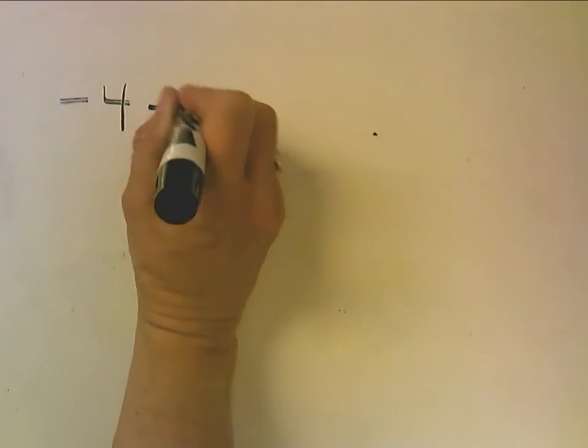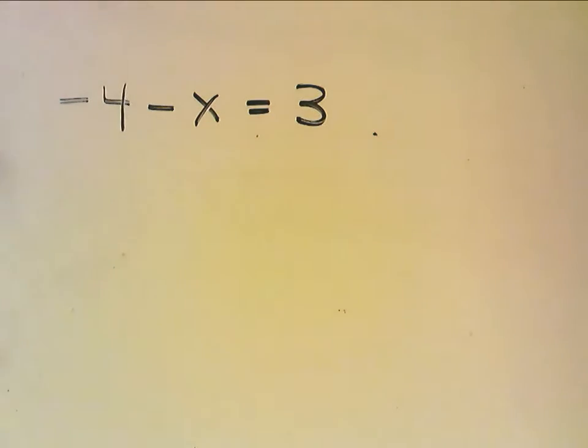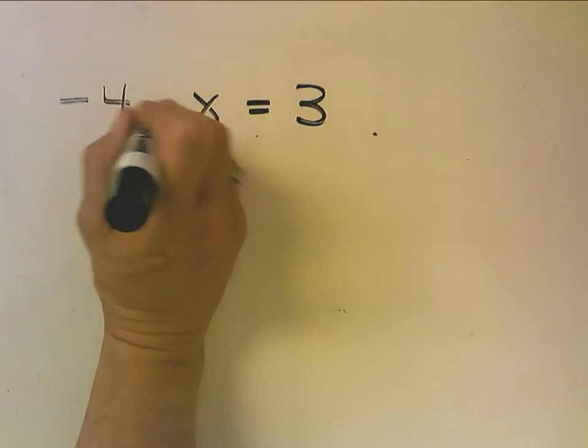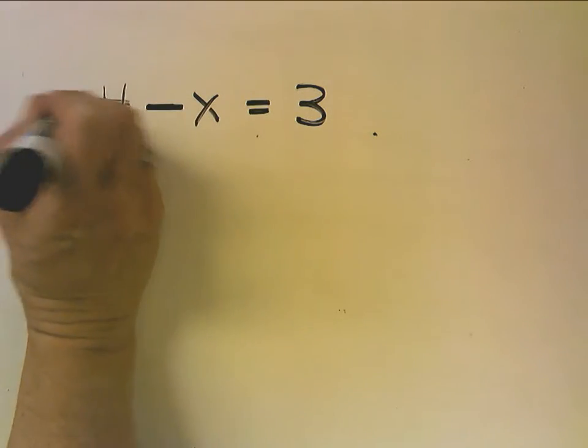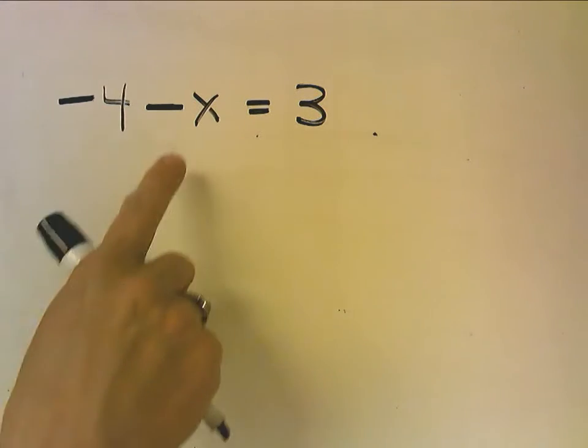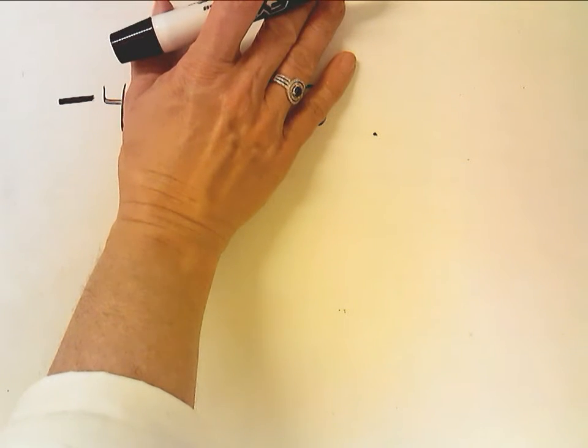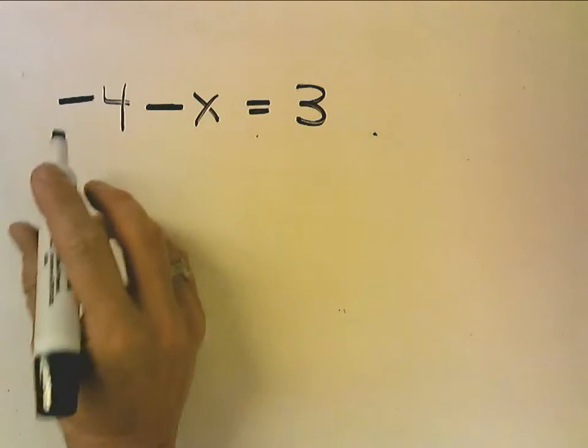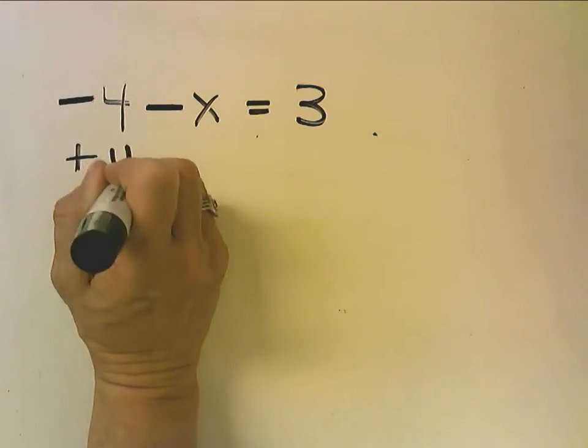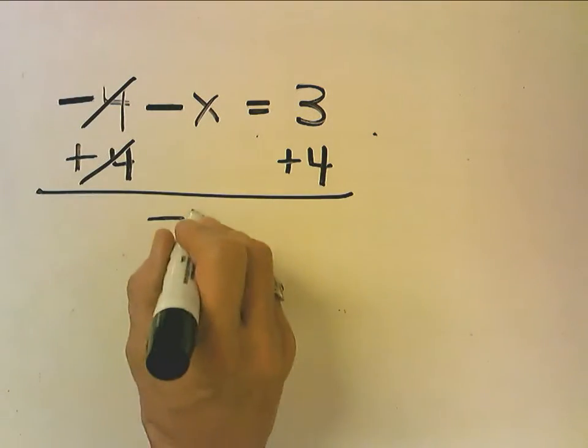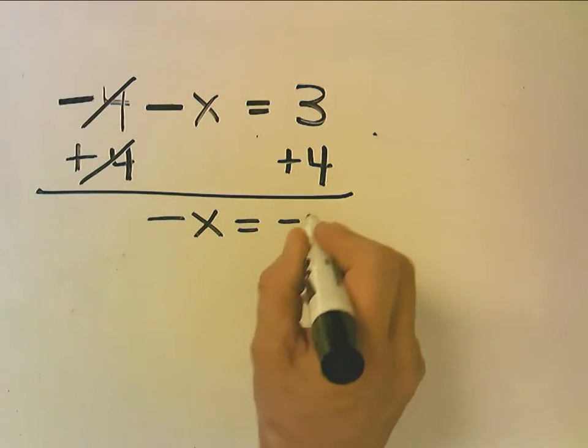We're going to do negative 4 minus x equals 3. People get confused by this because it's minus x, and you have to realize, you kind of have to ignore the negative x, because what you want to get rid of on the left hand side is the negative 4. What can we add to negative 4 to make it zero out? We would add positive 4. So you add positive 4 here, they cancel out, and you have negative x equals 7.